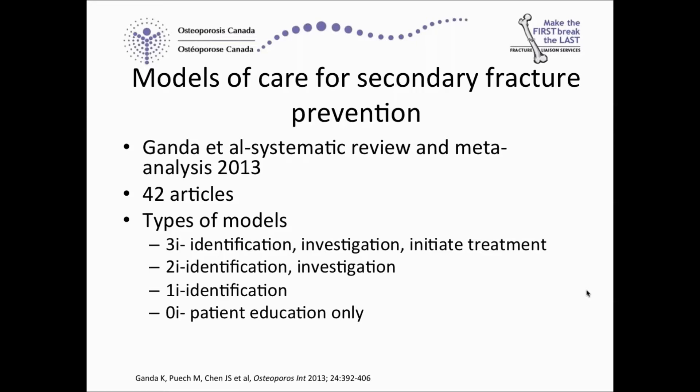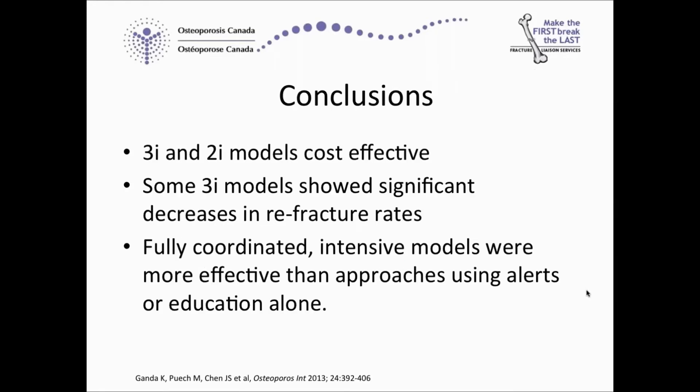Another meta-analysis and systematic review was published two years later by Ganda and his group. That's where we started to see the different types of FLS models being described. The Cadillac model was really the 3i model, including identification, investigation, as well as initiating treatment. 2i models focused only on identification and investigation. 1i models only identified patients who had presented with fragility fractures, and the 0i being patient education alone, which we know is not very effective. This meta-analysis really identified that the 3i and the 2i models were the best ones at closing the osteoporosis care gap.